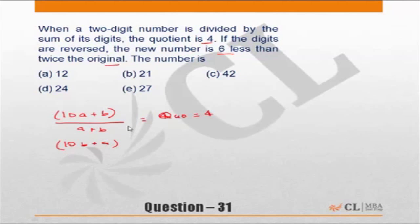If the digits are reversed, that is 10B plus A, the new number is 6 less than twice the original. Twice the original is 2 into 10A plus B minus 10B plus A should be equal to 6. The new number is 6 less than twice the original.